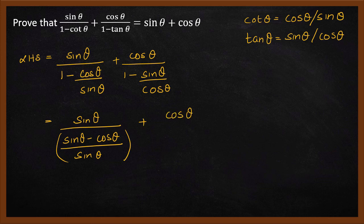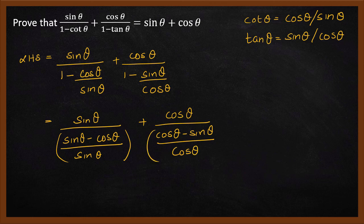...over sine theta, and cos theta divided by cos theta minus sine theta over cos theta. So that is the denominator. Simplifying this further, you get sine theta going to the numerator, and when multiplied by the other sine theta, you get sine squared theta.